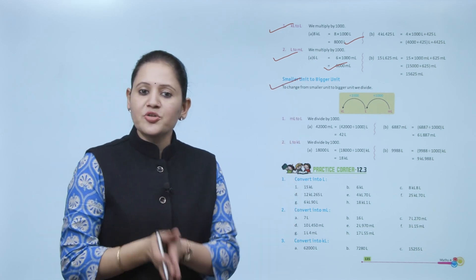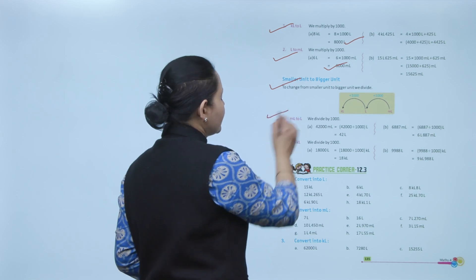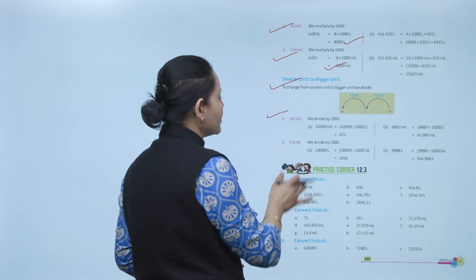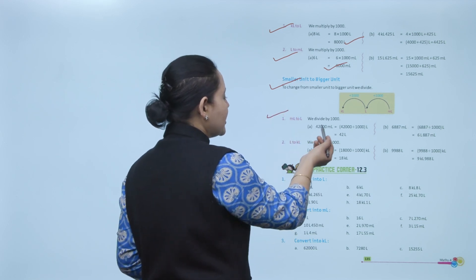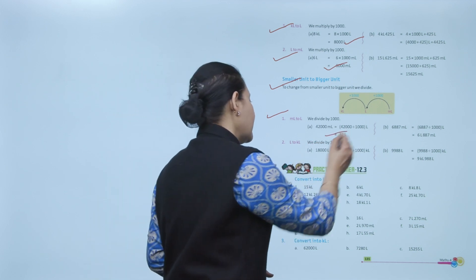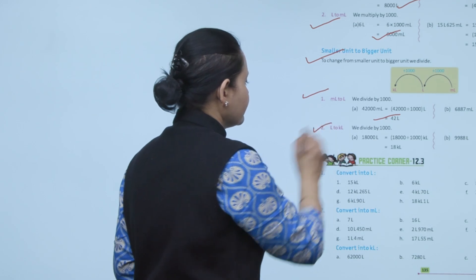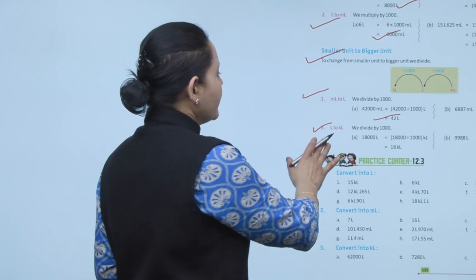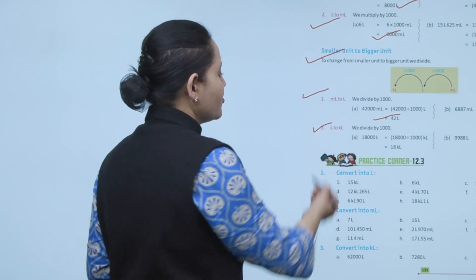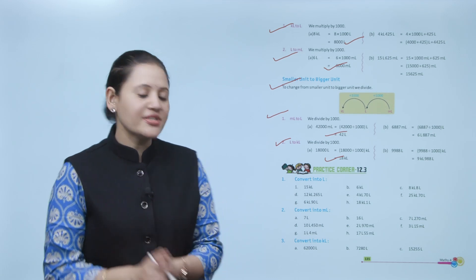To change a smaller unit to a bigger unit, we divide. Milliliter to liter: divide by 1000. So 42,000 milliliters equals 42 liters. Next, liter to kiloliter: divide by 1000. So 18,000 liters equals 18 kiloliters. Next is Practice Corner 12.3.